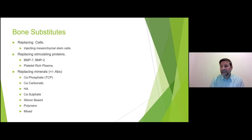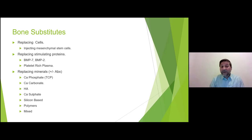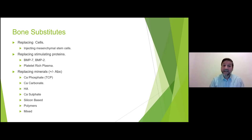I'm not aware of any trust where PRP is a common practice — I work with the limb reconstruction team, we have the facility but I haven't seen it done frequently. The more commonly asked-about option is replacing minerals with the ability to add antibiotics. These can be calcium phosphate, tricalcium phosphate, calcium carbonate, hydroxyapatite, calcium sulfate, silicon-based polymers, or a mixture of the above.